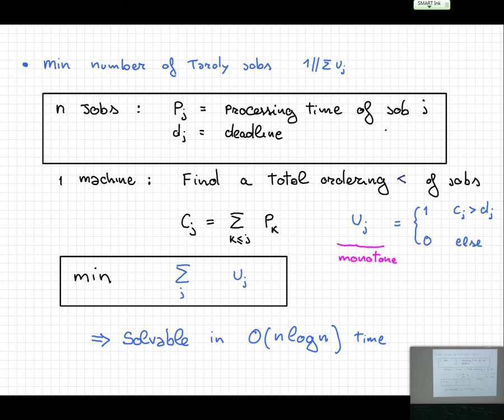I will show another problem solvable in polynomial time for which the integrality gap is unbounded. This is a natural tractable problem that is intractable for Lasserre. It can be solved in O(n log n) time, but even going to level square root of n, the integrality gap is unbounded. The problem is a scheduling problem: we have n jobs with processing times and deadlines. If a job completes after its deadline, you pay one. You want to minimize the number of late jobs. This can be solved in n log n time, but for a very natural linear program for this problem — even including the objective as a constraint — the integrality gap is unbounded.